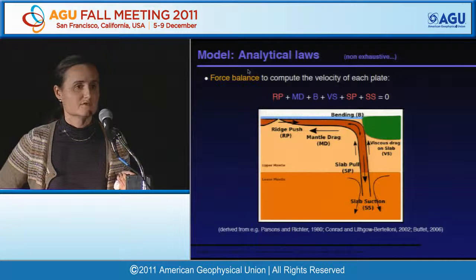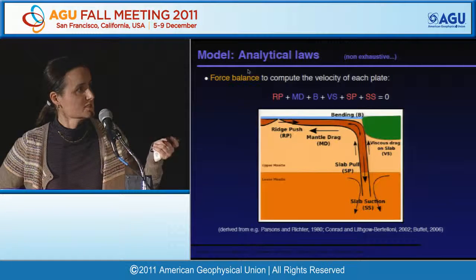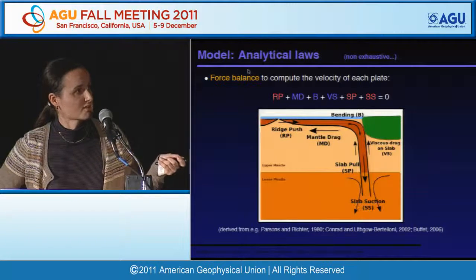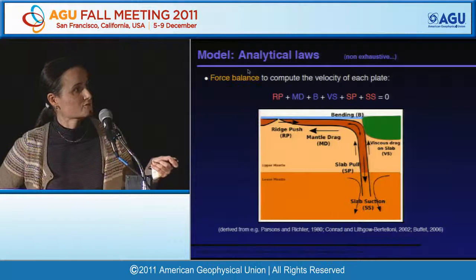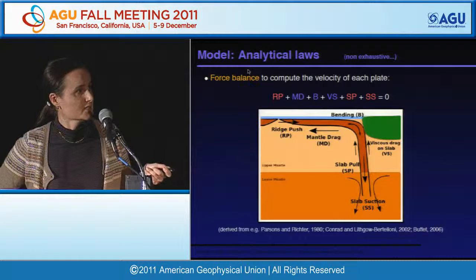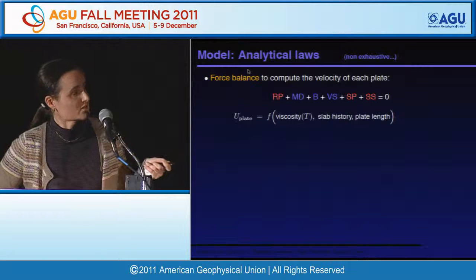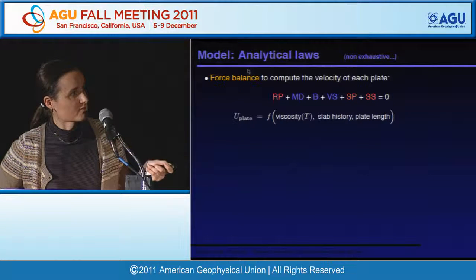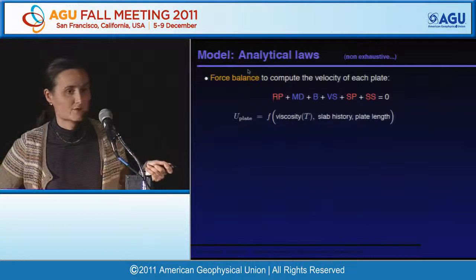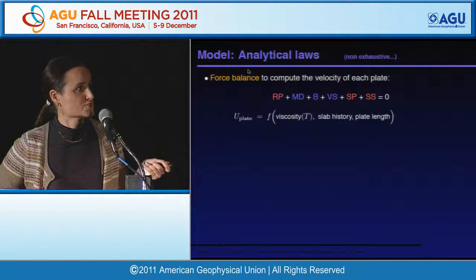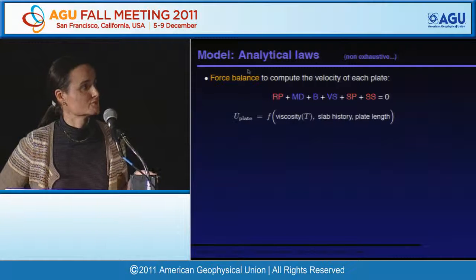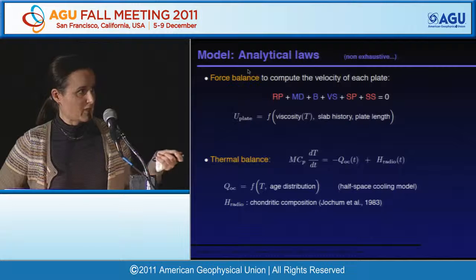The number of plates, plate boundaries, and plate lengths respond to the thermal state of the mantle and global surface dynamics. We compute the velocity of each plate through a simple force balance: driving forces are slab pull in the upper mantle and slab suction in the lower mantle; the main resisting force is mantle drag. The resulting velocity depends on mantle viscosity, slab history and depth, and plate lengths over which we integrate the mantle drag.